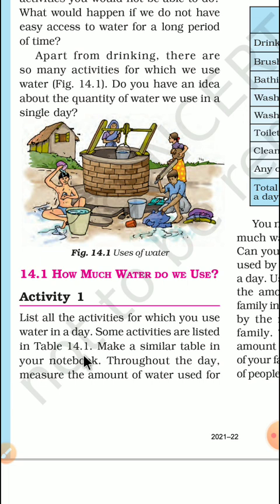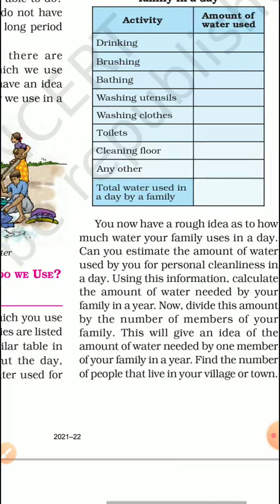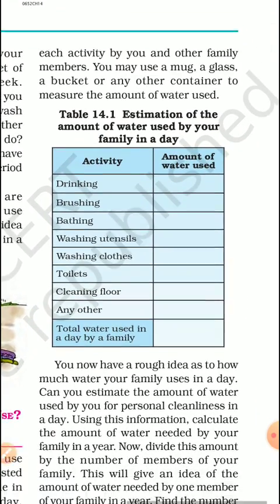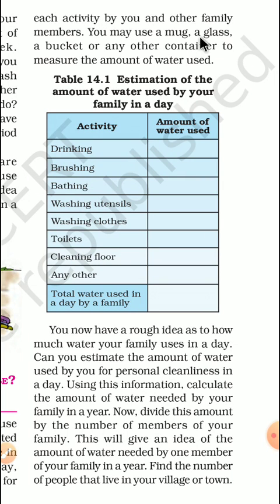Some activities are listed in table 14.1. Make a similar table in your notebook. Throughout the day, measure the amount of water used for each activity by you and other family members. You may use a mug, a glass, a bucket, or any other container to measure the amount of water used. You have to fill table 14.1: Estimation of the amount of water used by your family in a day — that is for drinking, brushing, bathing, washing utensils, washing clothes, toilets, cleaning floors, any other, and total water used in a day by a family.